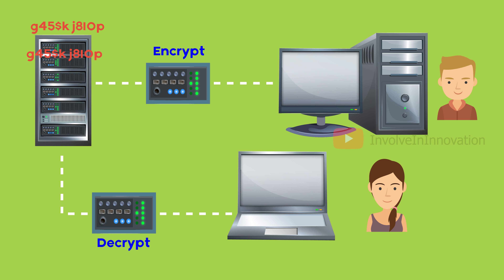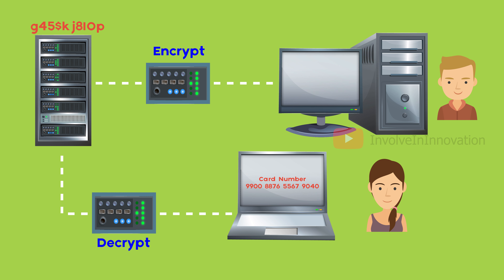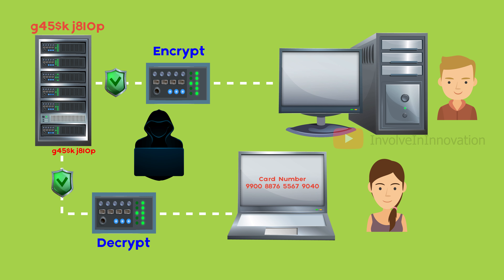From the server, Christy gets John's credit card information as cipher text and she decrypts the data. A hacker can hack the server and get John's credit card information, but it is in encrypted format, which the hacker cannot decrypt without the decryption algorithm or key. So the data will be secure even if it reaches an unintended audience, since they cannot crack the encrypted message.